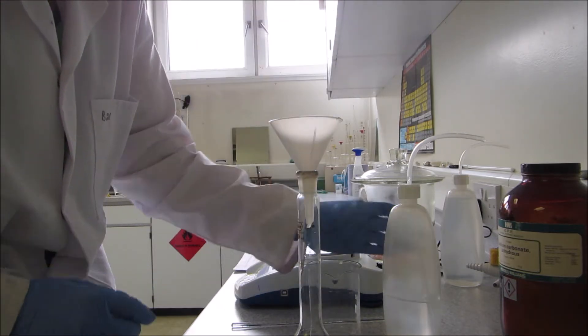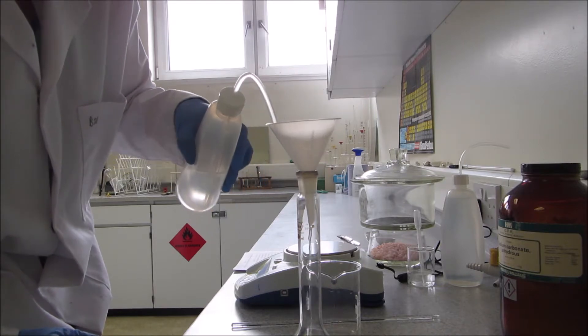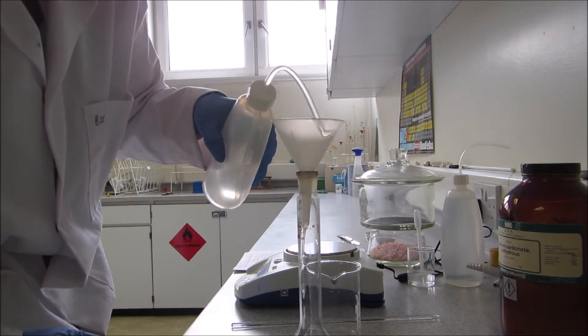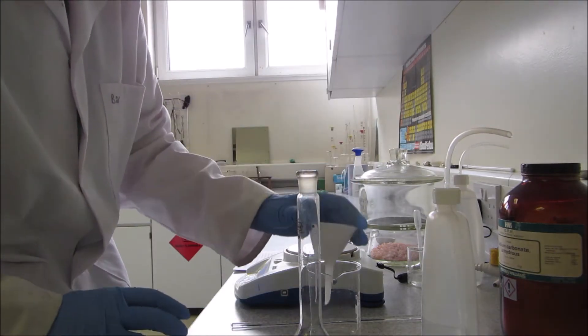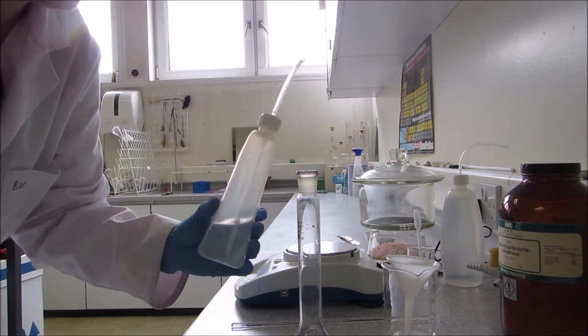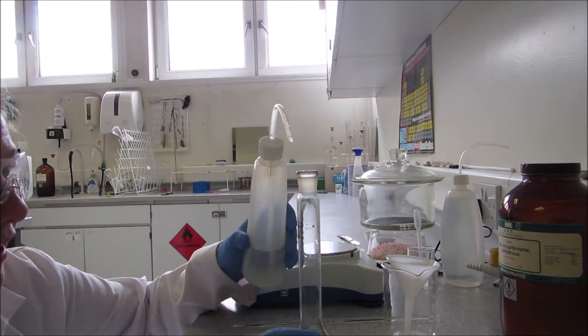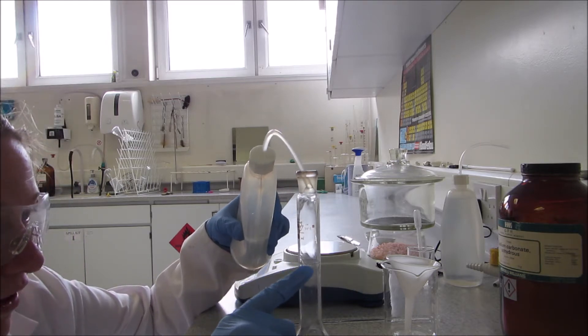And finally I'll just give a little swirl, rinse around those sides of the flask and funnel, and now I'm happy that that's got as much of my sodium carbonate solution into the volumetric flask as possible. Remove the funnel. So finally I'm going to fill this up with water to the darker mark.